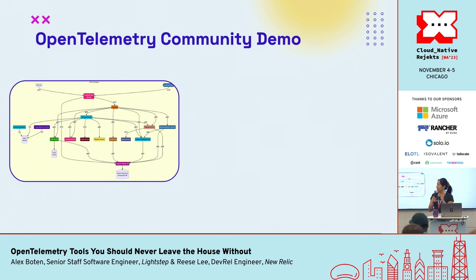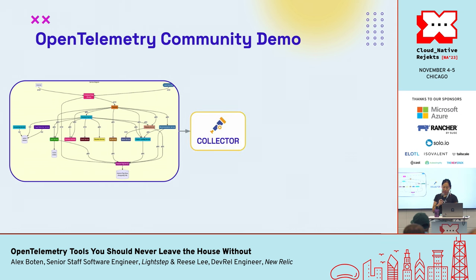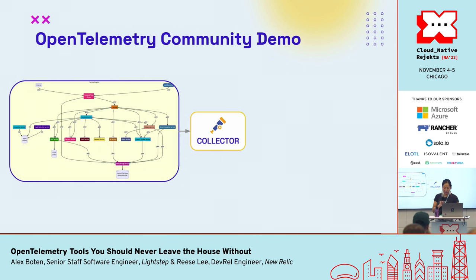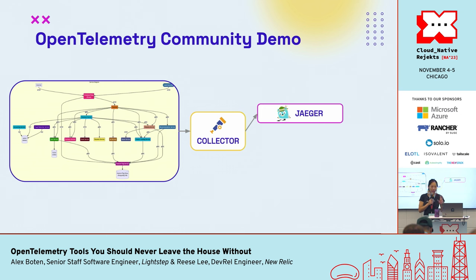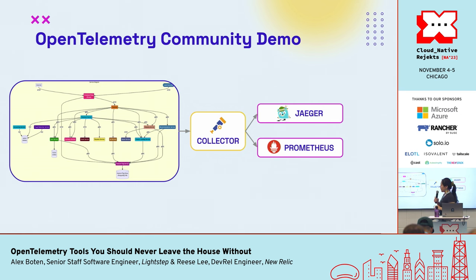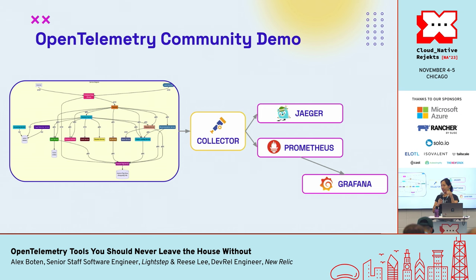The telemetry generated from the application makes its way to the collector. The collector will then ingest the data, transform it according to the configuration, and then finally it gets transmitted — in this case to two backends. It makes its way to Jaeger, which is an open source backend for traces, and also Prometheus, which collects and stores metrics, and you can see the metrics visualized in Grafana.